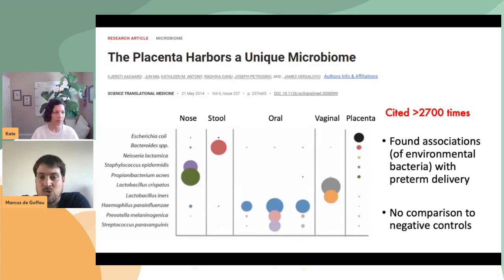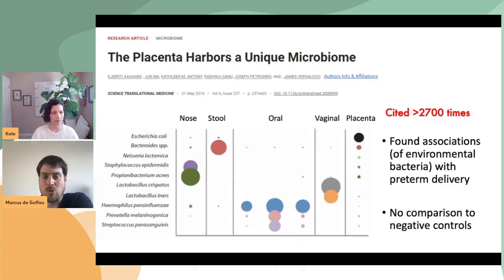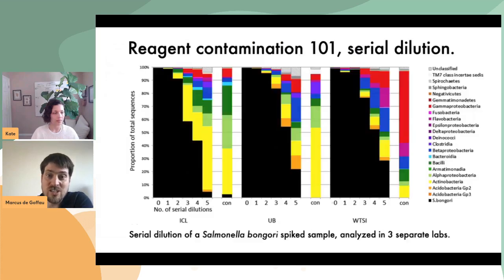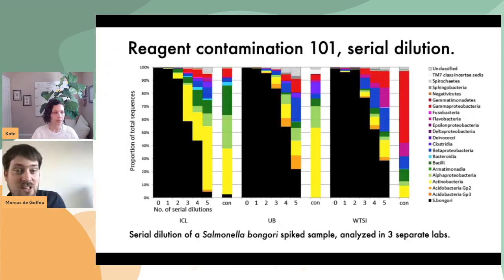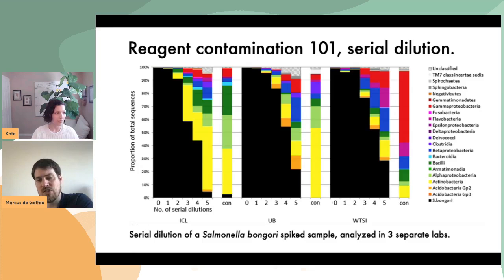They also failed to use common sense, because one of the main things one should take into account when looking at extremely low biomass samples — or samples with no microbial biomass — is the issue of reagent contamination. To explain the concept of reagent contamination, I'd like to show you the following picture.